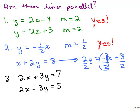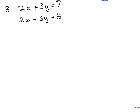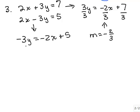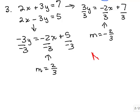Now let's look at the 3rd one. Those aren't in slope intercept form either, so I need to solve each of those. For the first one, 3y equals negative 2x plus 7. Dividing both sides by 3, the slope is negative 2 thirds. Now let's do the second equation: 2x minus 3y equals 5. Solving for y, I have negative 3y equals negative 2x plus 5. Dividing both sides by negative 3, negative 2 over negative 3 is positive 2 thirds. So this one has a slope of 2 thirds. They aren't the same, so no, those 2 lines are not parallel.